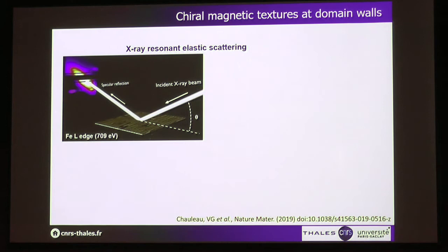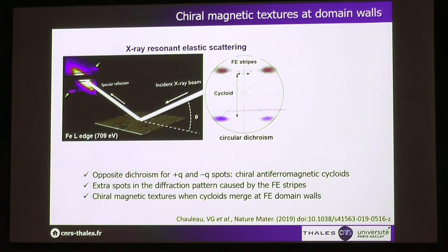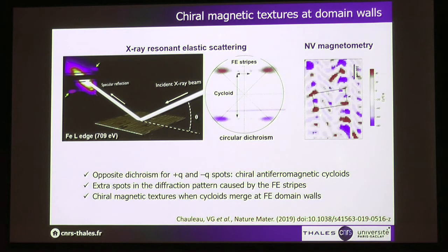Looking at the same film with the iron L-edge, the pattern is very different. We have four main peaks corresponding to two cycloids — a specular beam and two diagonal cycloid peaks. These two cycloids also show circular dichroism, which is expected because the spin cycloid is chiral and the sense of rotation is defined by the polarization direction. In addition, there are peaks in the middle corresponding to the ferroelectric stripes, which we interpret as a chiral anti-ferromagnetic object at the stitching of the cycloid at the domain walls. NV magnetometry also shows that the stray field is increased at every other domain wall. The group at CEA performed atomistic simulations, fixing the ferroelectric pattern and defining the unusual domain wall every other wall, and the simulated stray field is quite similar to what we observe experimentally.